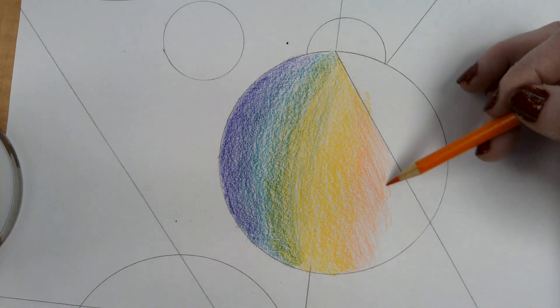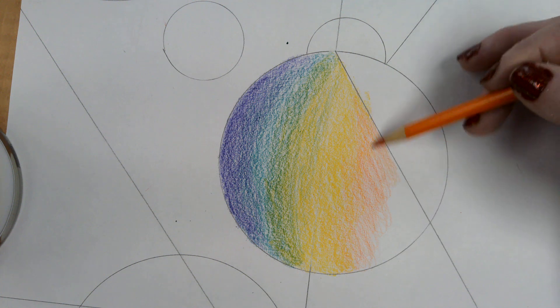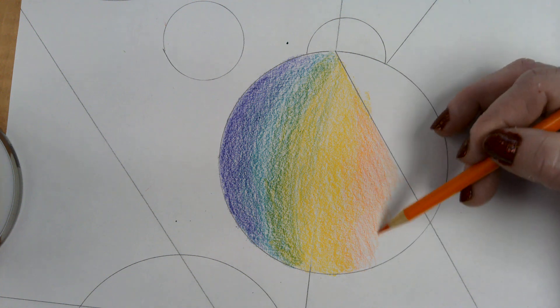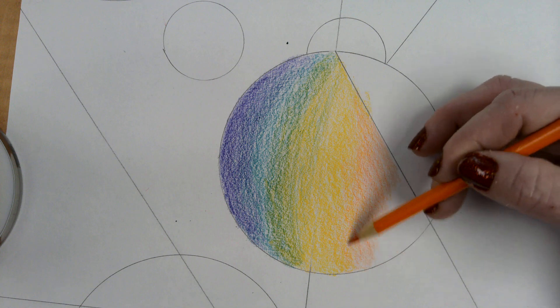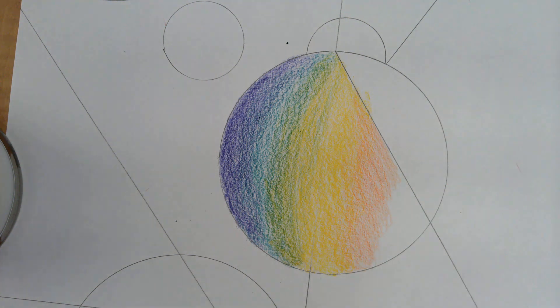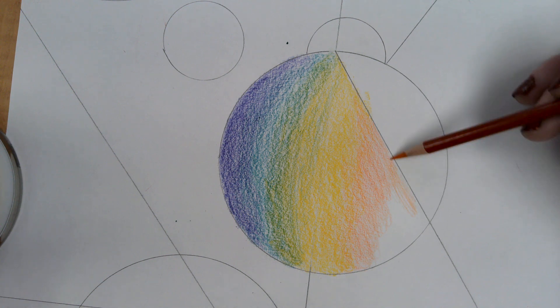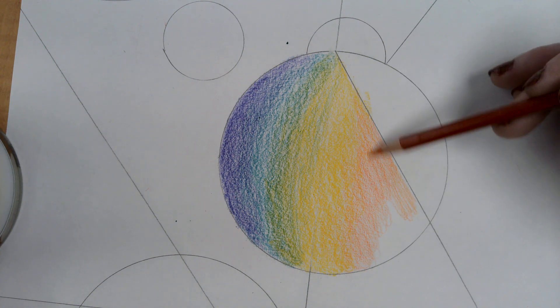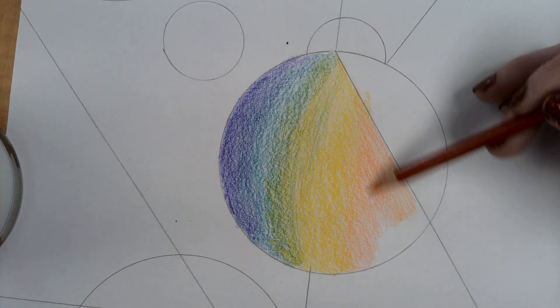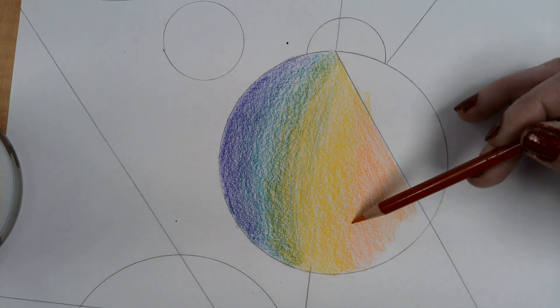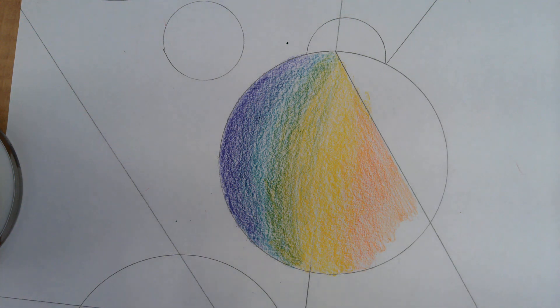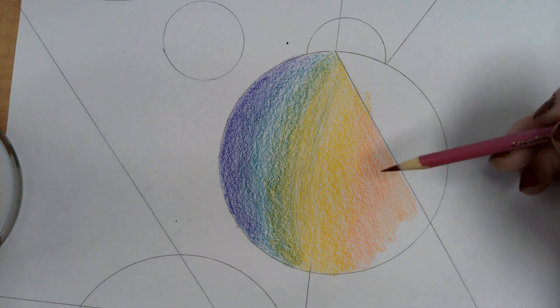And if you want it to be darker you just go back over at the same pressure, you just go over it more times to make it darker. Then I'm going to transition to red. Aw this looks like orange. It's a different kind of orange. That's okay. We can transition to a magenta.